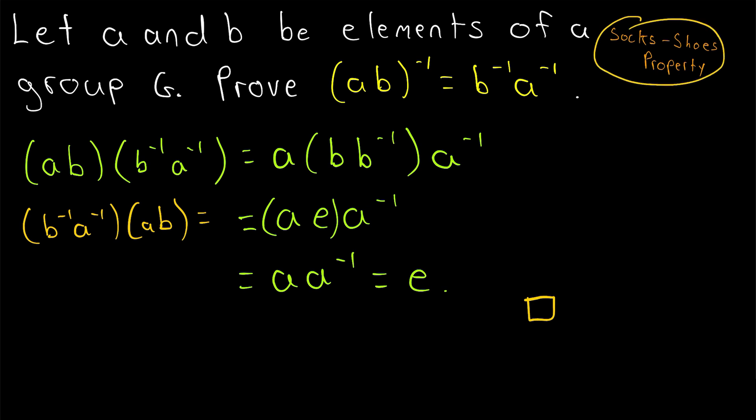And that's the proof of the socks and shoes property for groups. The inverse of the product of two elements is the product of their inverses in the opposite order. I hope this video helped you understand the proof. Let me know in the comments if you have any questions, need anything clarified, or have any other video requests.